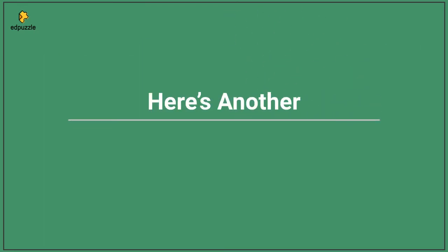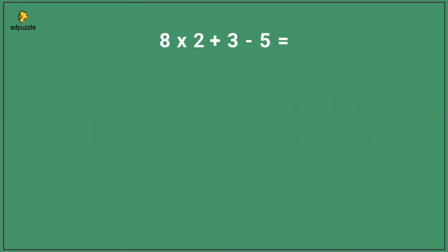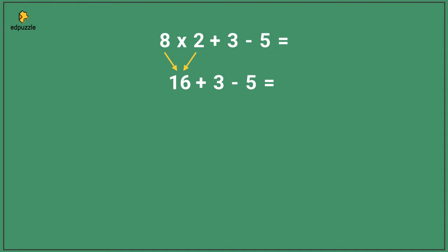Here is another problem — solve this problem on your own. Don't forget to bring down your remaining terms each time you solve one part of the problem. The value of this expression is 14. You would multiply 8 times 2, which is 16. Bring down the remaining terms and operations, then solve 16 plus 3, which is 19. After bringing down the remaining terms and operations, you are left with 19 minus 5, and that equals 14.